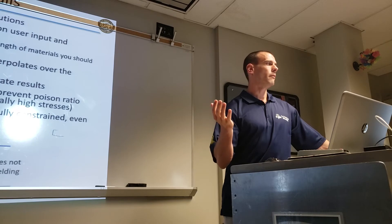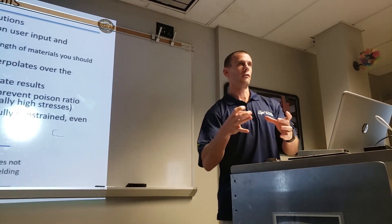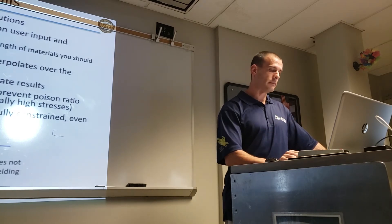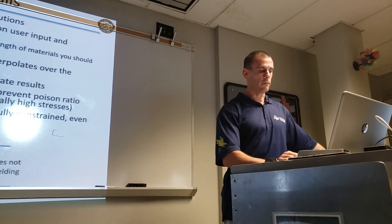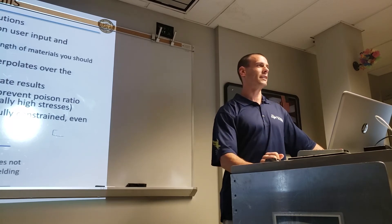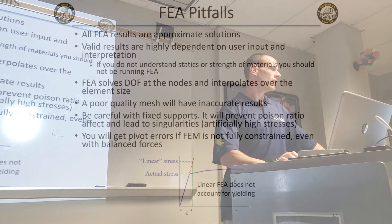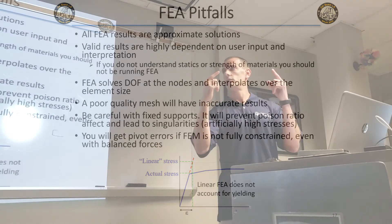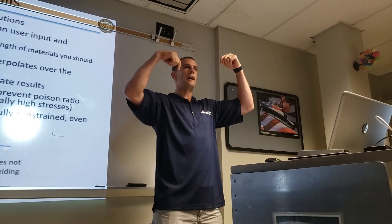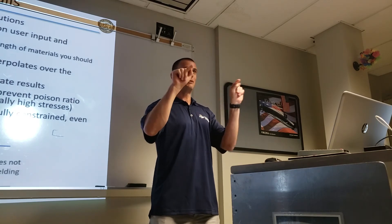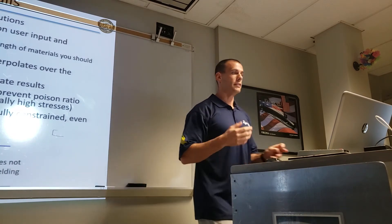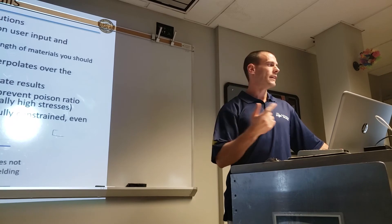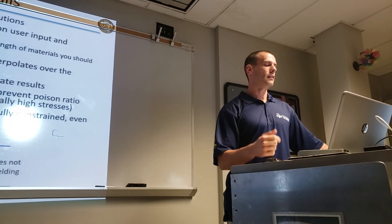With a beam element that's not a problem because it's just a node, not a full surface being constrained. Be careful with fixed supports — most of the biggest errors I see from students is that wherever the part touches something else they apply a fixed constraint, which is fundamentally wrong and gives totally wrong answers. You can also get pivot errors even with balanced forces — for example, a simply supported beam with only downward forces needs to also be constrained in the other directions, otherwise you'll get excessive pivot errors because you didn't constrain it properly.